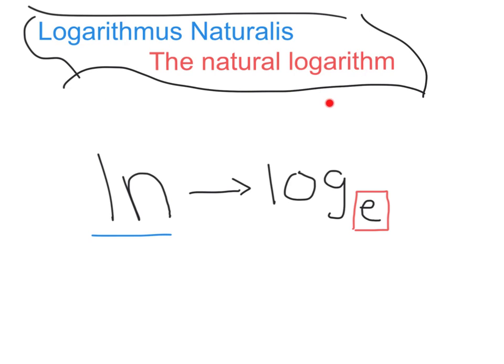Logarithmus naturalis, the natural logarithm. We represent the natural logarithm with ln, and when you see ln we basically know that we have a log with the natural base e.